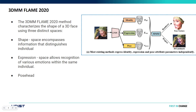Let's see how they use the 3D MM FLAME 2020 method. It characterizes the shape of 3D faces into three spaces: shape, expressions, and pose/head space. The shape space contains information that distinguishes individuals from one another. The expression space allows recognition of various emotions within the same individual — if the same individual has different kinds of expressions, we need information to mark those vertices or displacements in space.